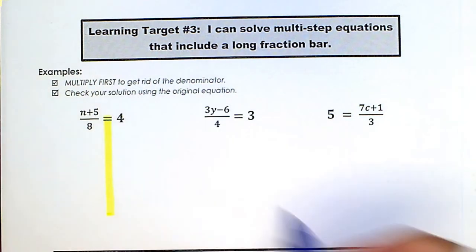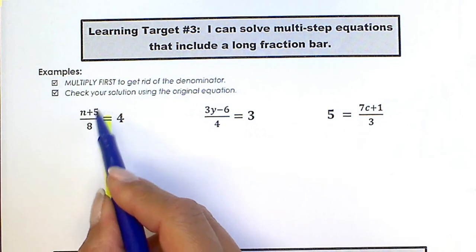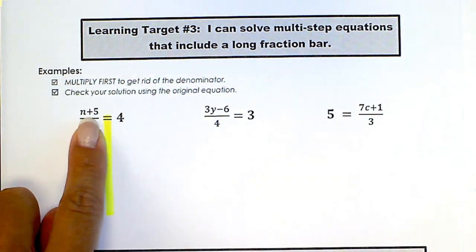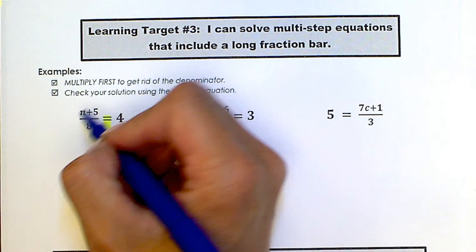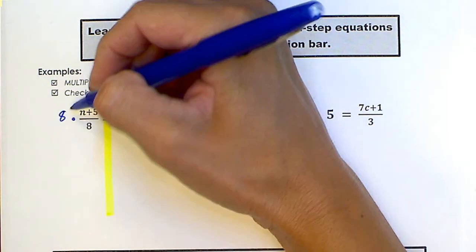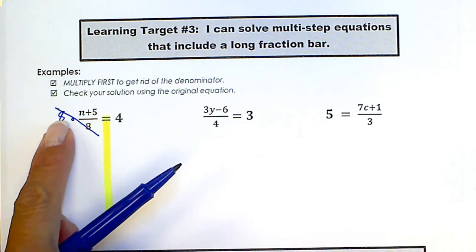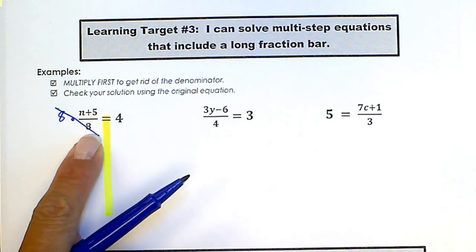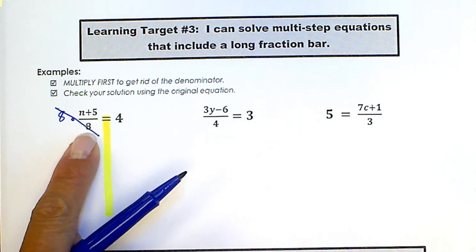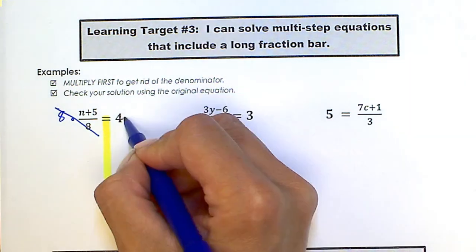Now you can kind of think of the top having parentheses. The n plus 5 belong together, so when I do my times 8, the 8s will still cancel. I don't need to distribute the 8 up here, because the 8 in the numerator will cancel with the 8 in the denominator before I do anything else. So the opposite of dividing by 8 is to multiply by 8, so I'm going to do that over here.